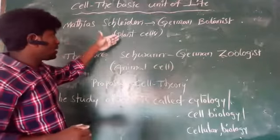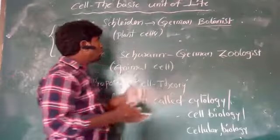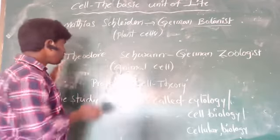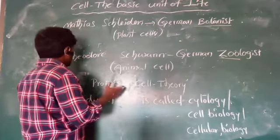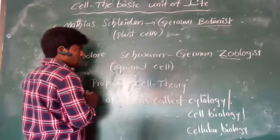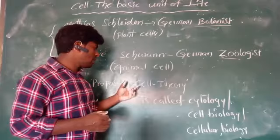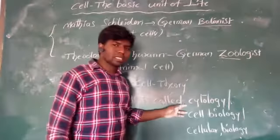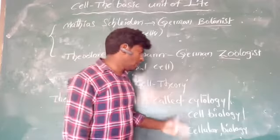Matthias Schleiden was a German botanist — the study of plants — and he studied plant cells. Theodor Schwann was a German zoologist — the study of animals — and he studied animal cells. Together they formulated the cell theory. The study of cells is called cytology, or cell biology, or cellular biology.